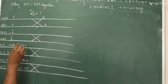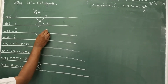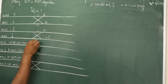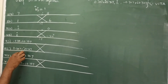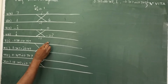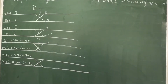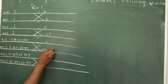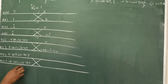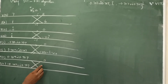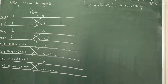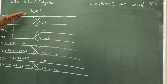So 7 plus 1 is 8, and 7 minus 1 is 6. Then minus i plus i is 0, and minus i minus (minus i) gives minus 2i. Similarly, adding gives 0, and subtracting gives minus 1.414 minus i times 1.414. And adding the next pair gives 0, and subtracting gives 1.414 minus i times 1.414. We have completed Stage 1.